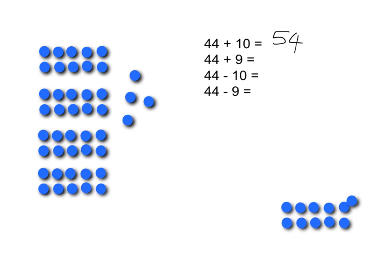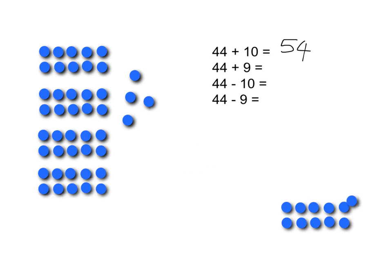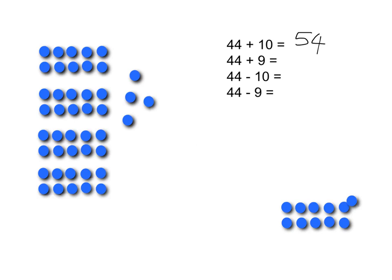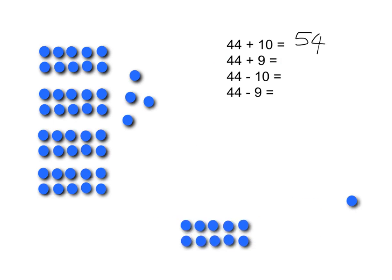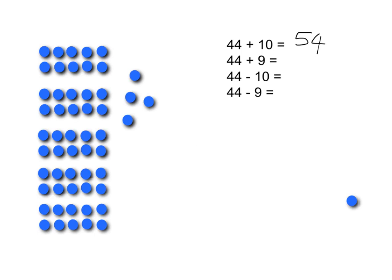Now what happens when I want to do 44 plus 9. Well what happens there? I'm going to instead of counting out 9 individually give you 10. Well that makes it up to 54. But I wasn't meant to give you 10. I was only meant to give you 9. So you must give me one back. And so you've got 54. One less you've got 53. Very quick and easy.